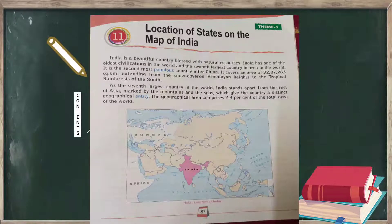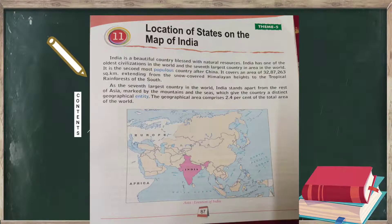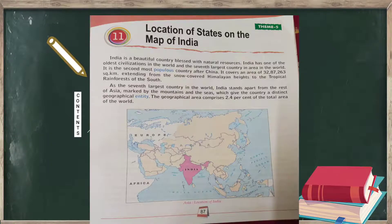India covers an area of 32,87,263 square kilometers, extending from the snow-covered Himalayan Heights to the tropical rainforests of the south. As the seventh largest country in the world, India stands apart from the rest of Asia, marked by mountains and seas which give the country a distinct geographical entity.